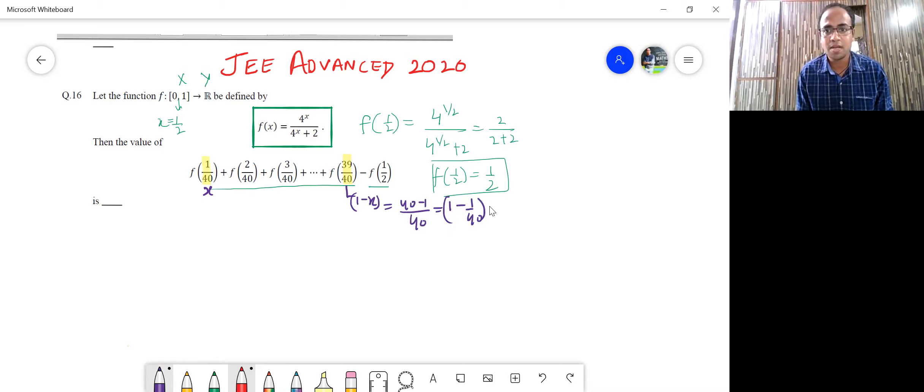So we observe this comes out to be, if this is x, then this is 1 minus x. All such combinations are present. If this is again x, then we can find here f(38/40), which will again behave as if it is 1 minus x. Similarly, if I have calculated f(1/2), then f(1 minus 1/2), that is nothing but 1 minus, if this is x, this is 1 minus x, f(1-x) would come out to be, yes, you got it right, again f(1/2), which is nothing but 1/2.